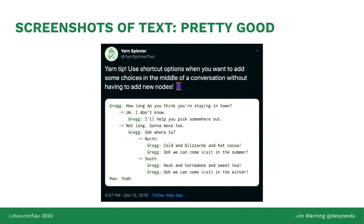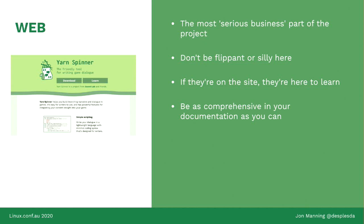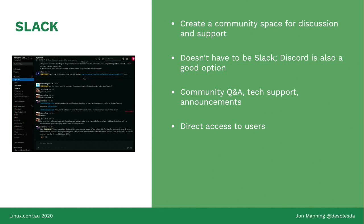The web component of our presence is the most serious business part of the project. We make sure we aren't flippant or too casual there — if they're on the site, they're there to learn. So we try to be as comprehensive and straightforward: this is Yarnspinner, it does this thing, go here to download it. We have a Slack community, primarily as the direct point of contact people can have with the developers. Some kind of live chat system is really important to have for a community. We use Slack, but Discord is increasingly popular, especially for game developers since game devs tend to be game players and Discord is where players are.